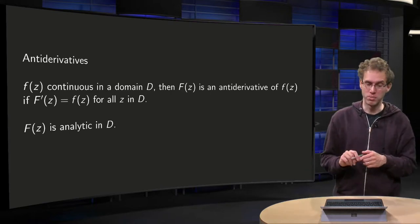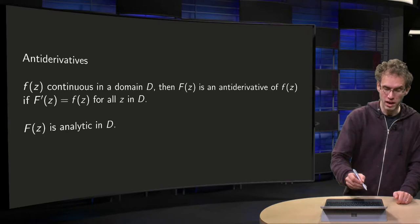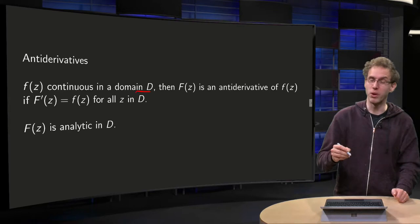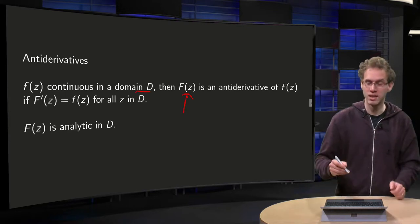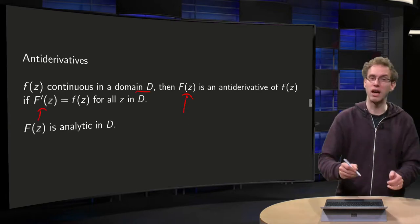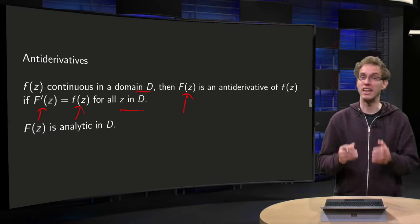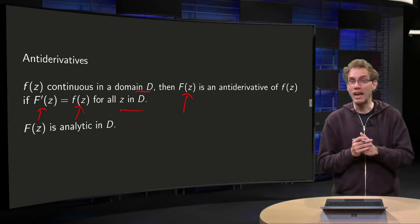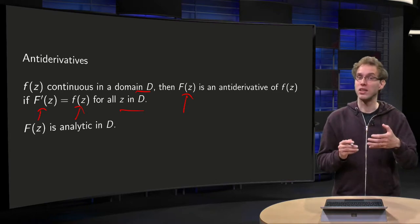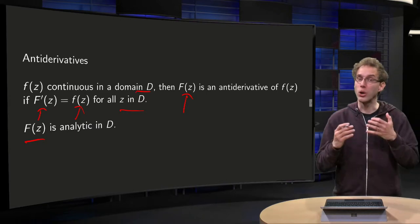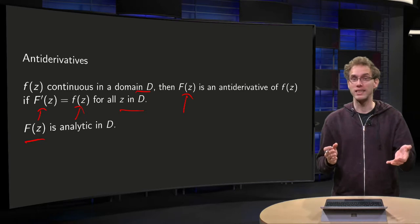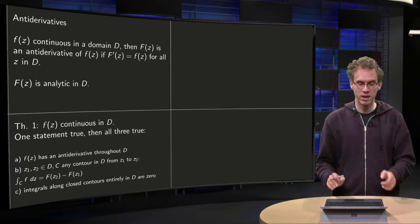We have a theorem for that. If f of z is continuous in domain D, then what is the antiderivative of f? That antiderivative is called capital F of z, and that is an antiderivative if the derivative of capital F equals small f for all z in D. That is what we will call an antiderivative, exactly the same as in the real case. And notice that this capital F of z is automatically analytic in D, because its derivative exists at small f.